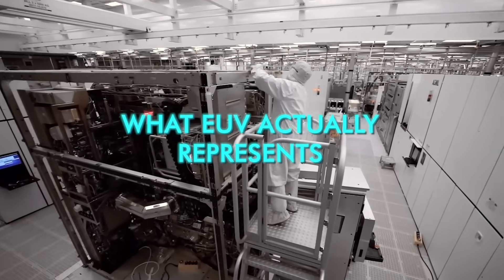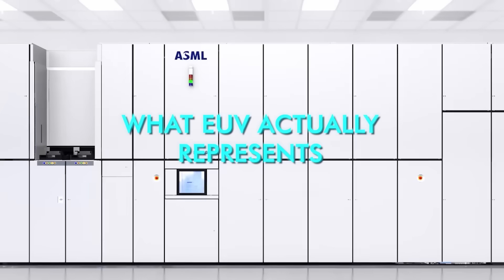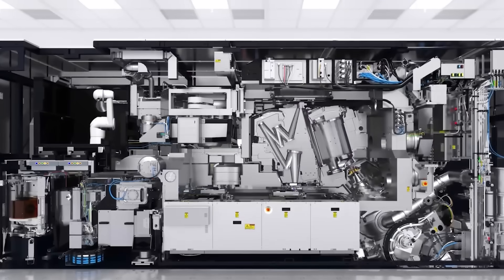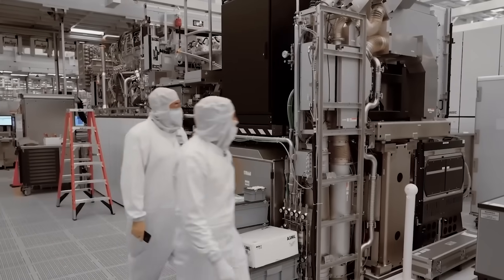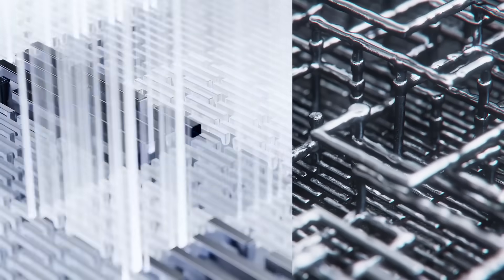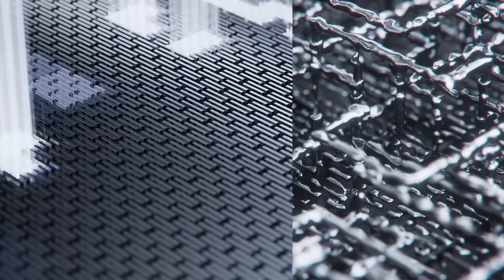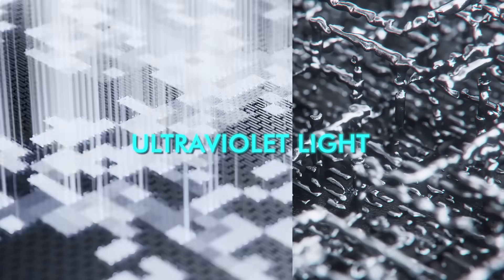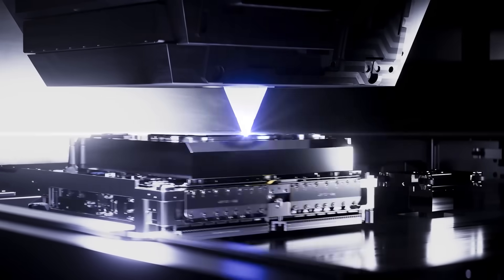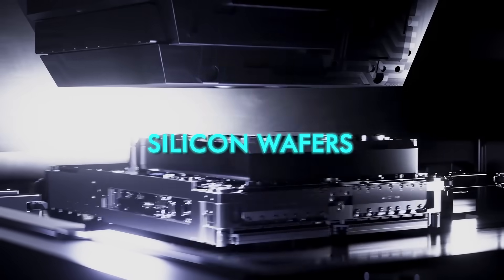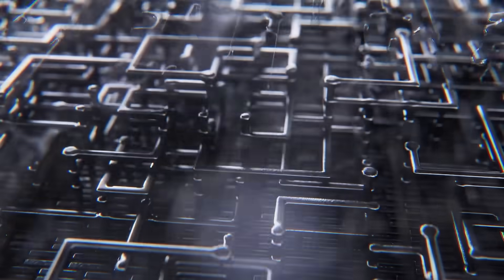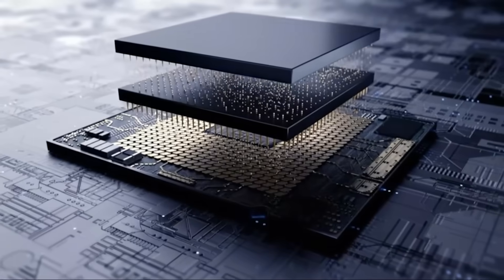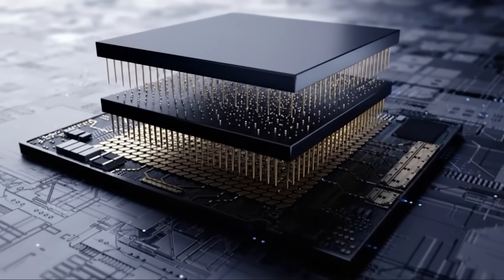To understand why this matters, it is important to understand what EUV actually represents. EUV lithography is not simply another machine in a factory. It is the mechanism that allows chip makers to print the smallest circuit patterns humanity has ever produced. The process uses extreme ultraviolet light to draw billions of microscopic features onto silicon wafers, features so small they are measured in single-digit nanometers. The smaller the features, the more transistors can be packed into a chip and the more powerful and energy-efficient that chip becomes.